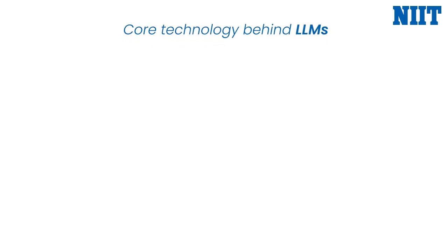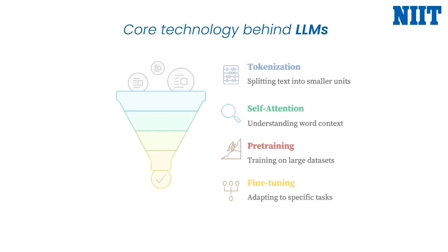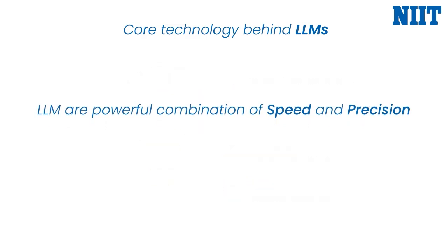What's the secret behind this incredible capability? At the core of LLMs is the transformer architecture, a breakthrough that changed everything about how AI processes language. Unlike other models that worked one word at a time, transformers can analyze entire sentences simultaneously. Their self-attention mechanism acts like a magnifying glass, zeroing in on the most important words and understanding the relationships between them. This means that even when dealing with long paragraphs or complex topics, LLMs can maintain context and generate responses that are both accurate and relevant.